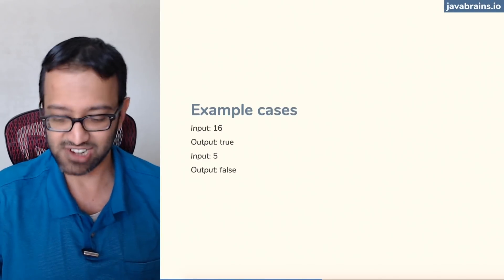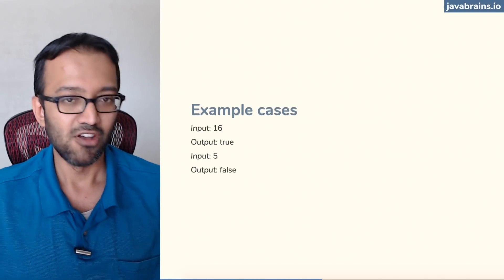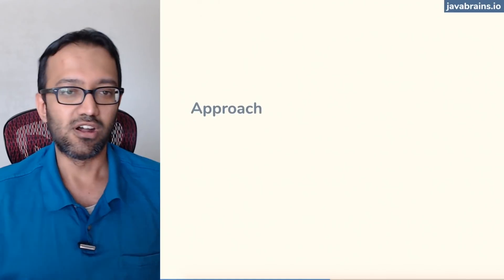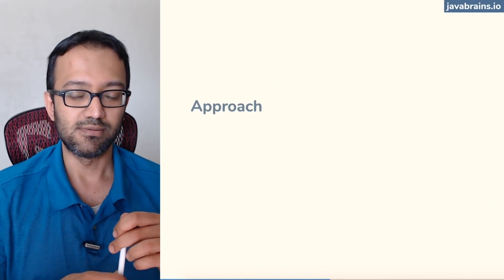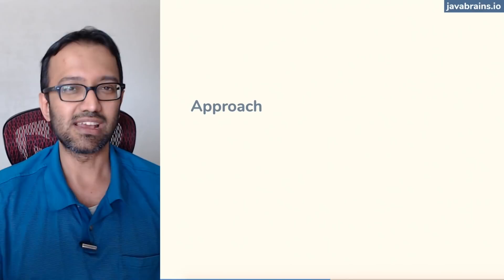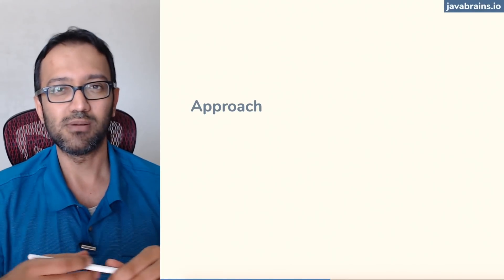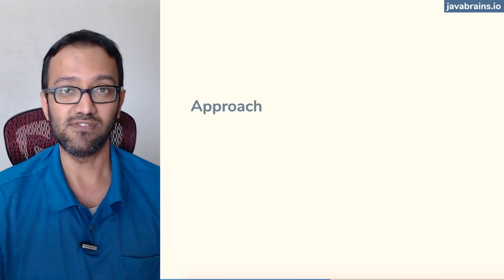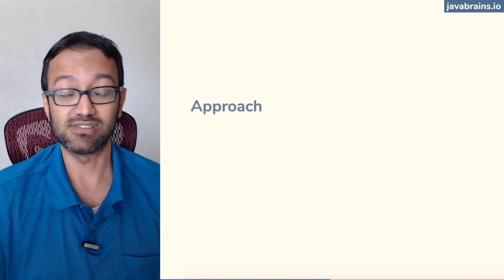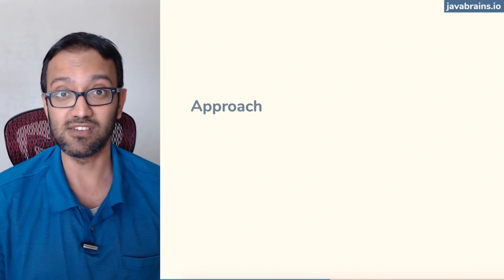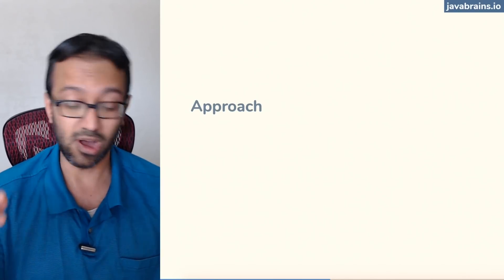So how are we going to solve this in Java? Before we look at the approach, think of the corner cases. In this case it's a mathematical problem, so you kind of know what the corner cases are. For example, if the input is zero, the result is obviously false. If the input is one, the result is obviously false.